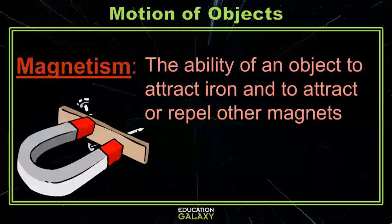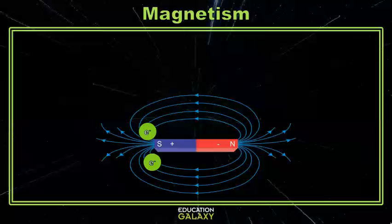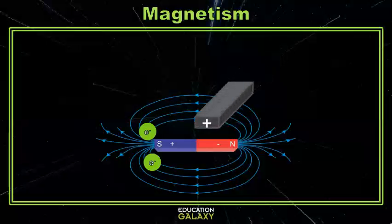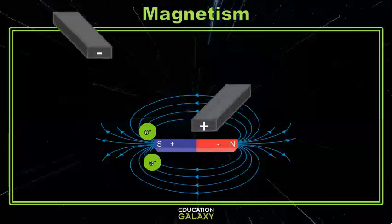The last type of force we'll talk about today is magnetism. Magnetism is an object's ability to be attracted or repelled by a magnet, or an object's ability to attract iron. Magnetism is caused by electrons being charged and attracting the opposite side of an object, which makes a magnetic field. If another magnet or iron-containing metal enters this magnetic field, the object will either be attracted, or if it is negatively charged, the object will be repelled.